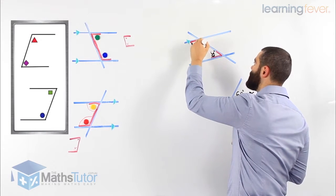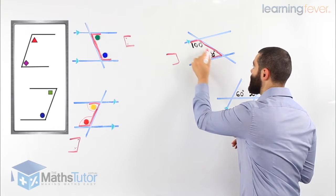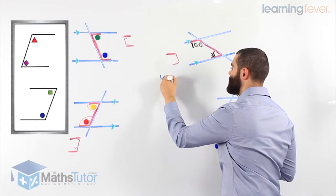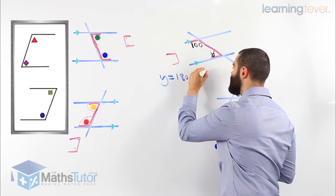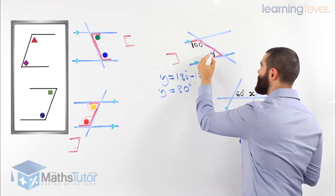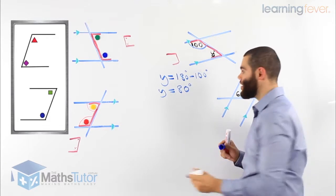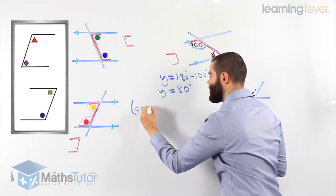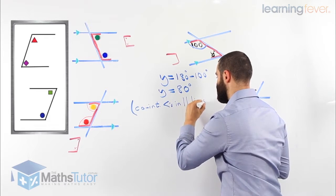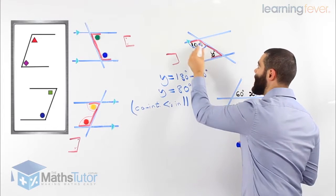We highlight that angle, highlight that angle, join them together — we make a C backward looking shape. Therefore, we know straight away it's a C, referring to co-interior. So these are co-interior angles, which means they add up to 180 degrees. Y is going to equal 180 degrees take away 100. Therefore Y is going to be 80 degrees. Y plus 100 makes 180, so 180 take away 100, we are left with 80 degrees. And of course, always our reason: co-interior angles in parallel lines.